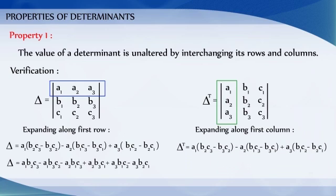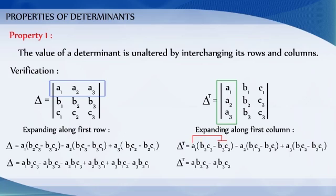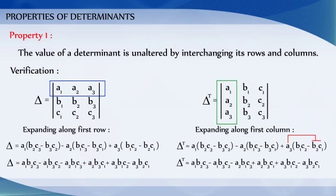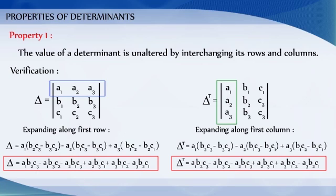We get the determinant value as: a1·b2·c3 minus a1·c2·b3, minus a2·b1·c3, plus a2·b3·c1, plus a3·b1·c2, minus a3·b2·c1. We observe that both the determinant values are the same. Therefore, if A is a square matrix, then determinant of A is equal to determinant of A transpose.